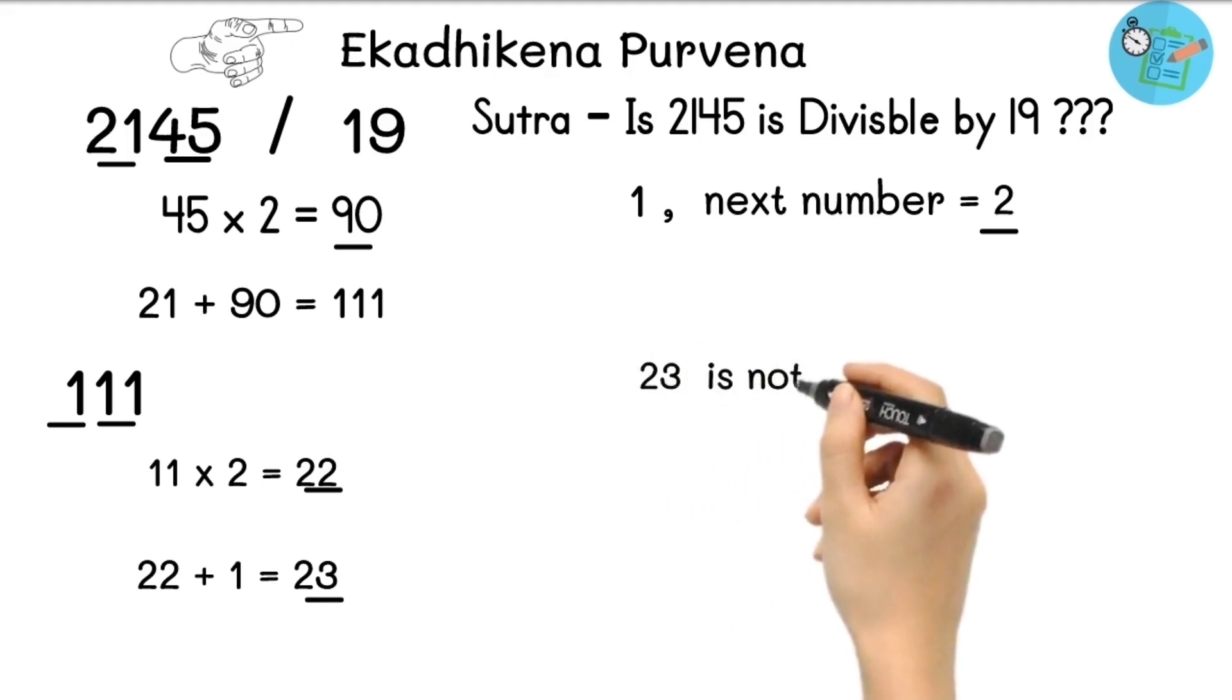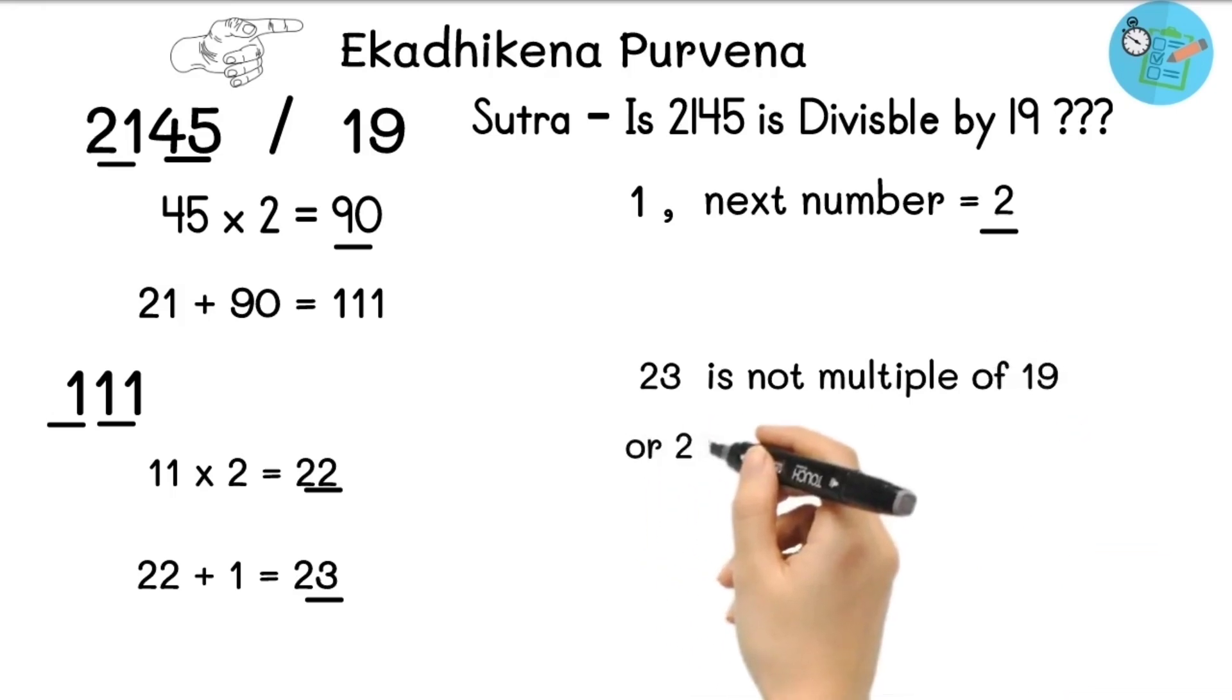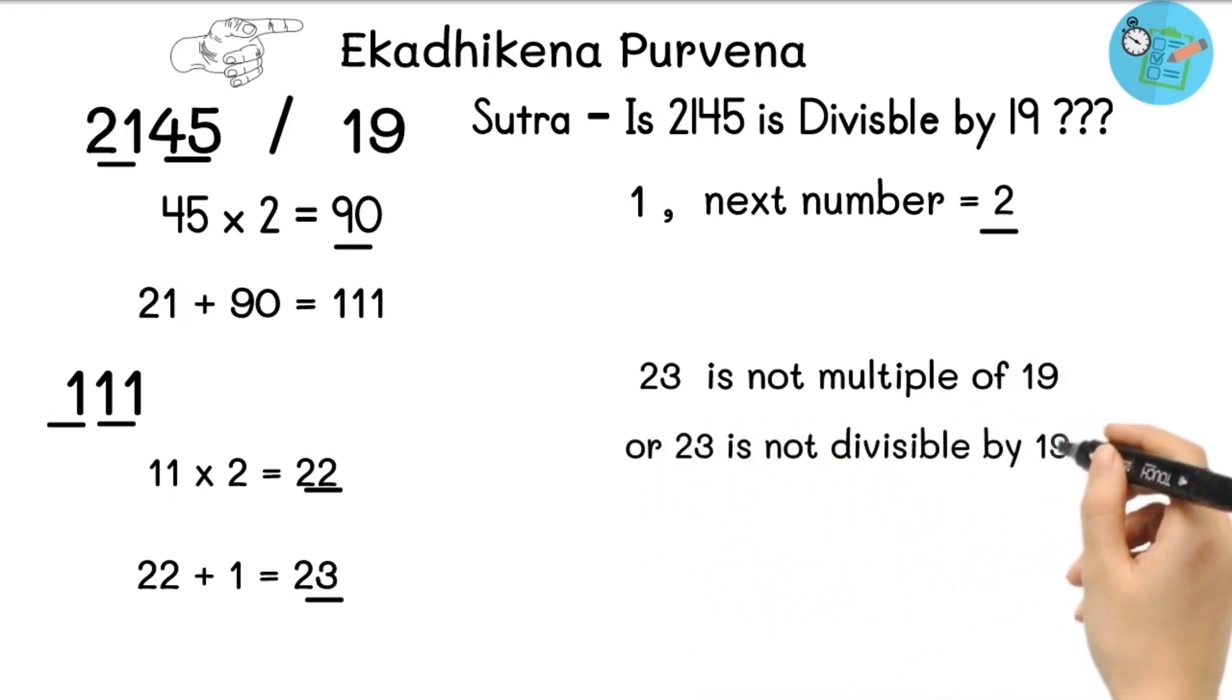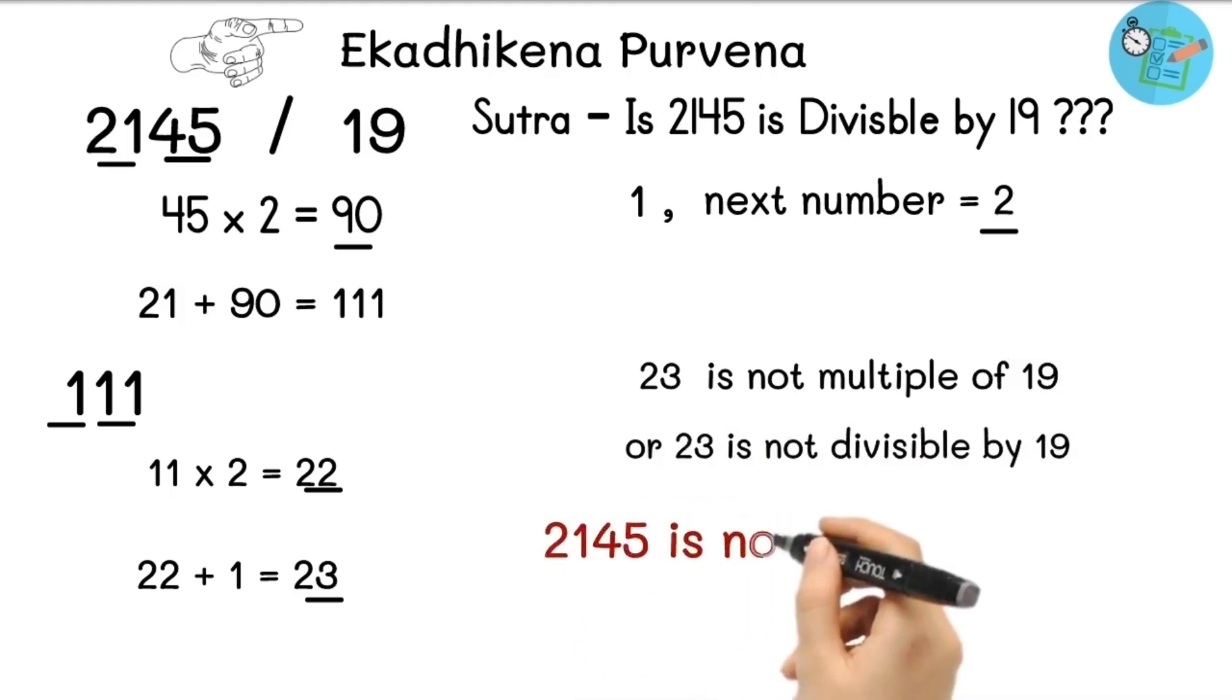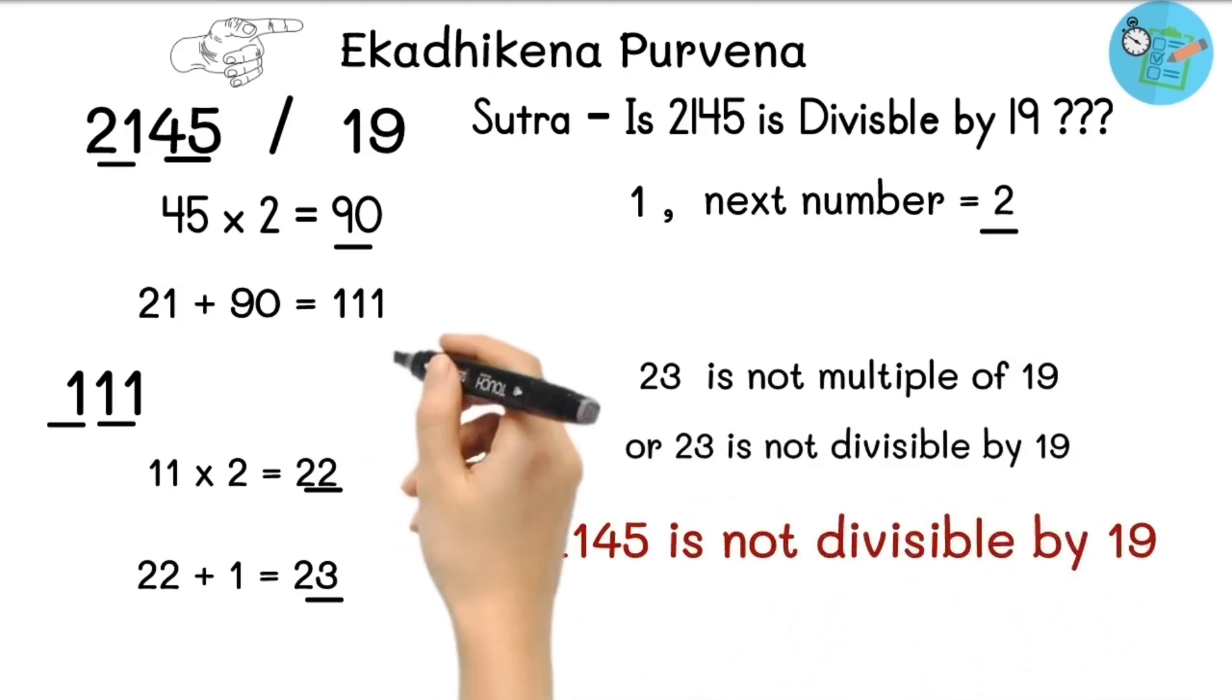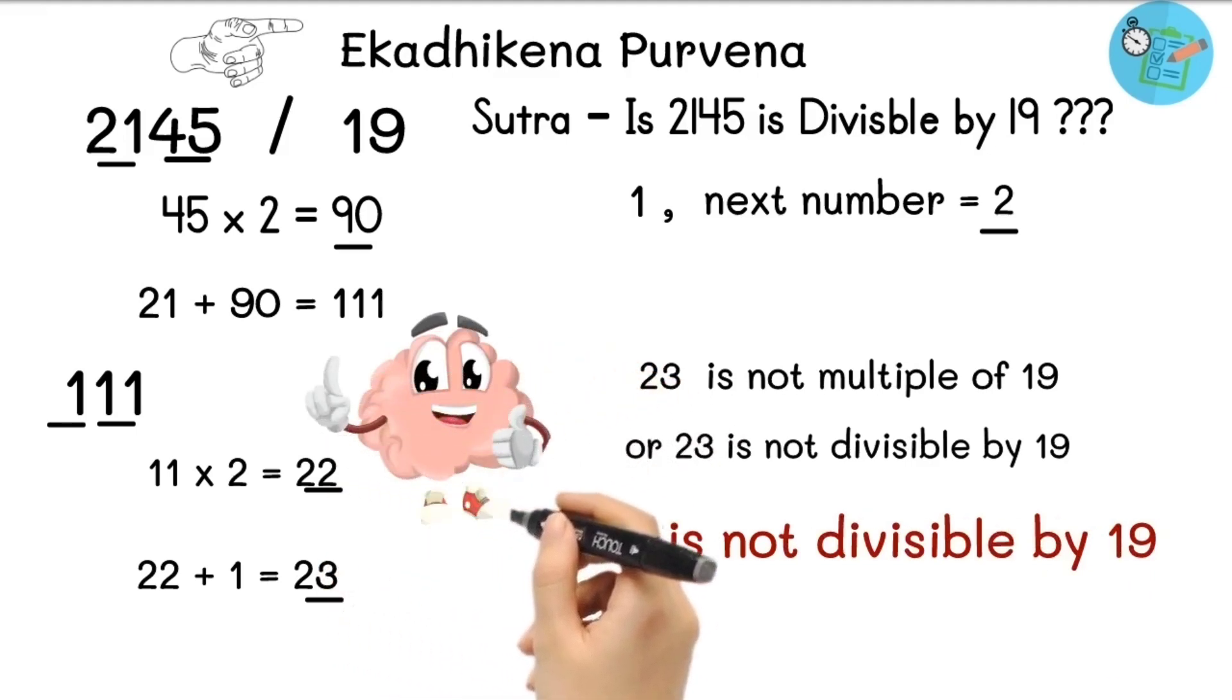Now we need to take this 23 and compare it with 19. We know that very well that 23 is not a multiple of 19, or we can say that 23 is not divisible by 19. So for that reason we can conclude 2145 is not divisible by 19. So in this way you can apply Vedic Math Sutra to find out whether the given number is divisible by the number which ends with 9 or not.